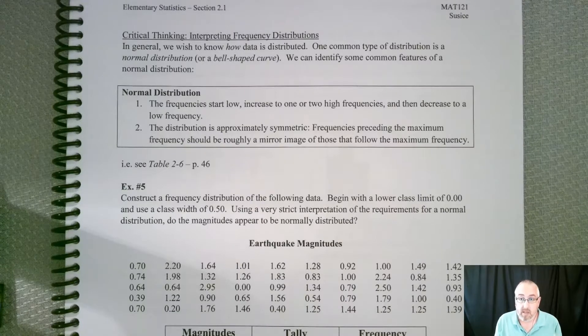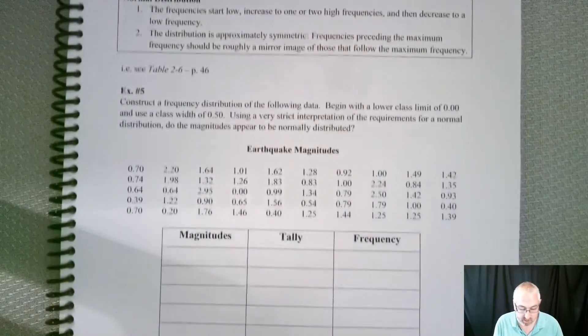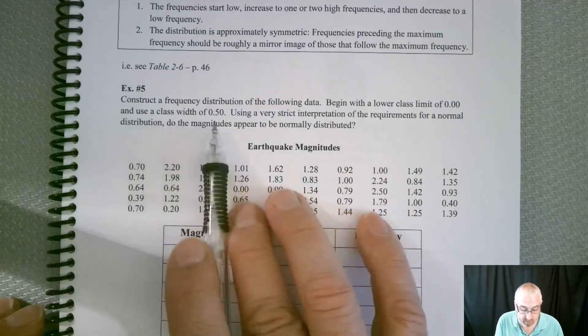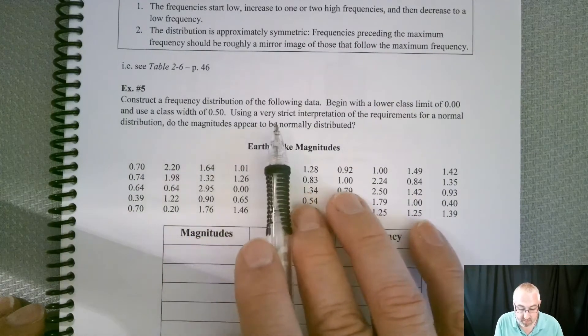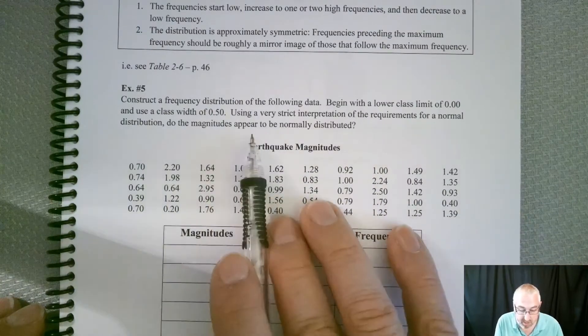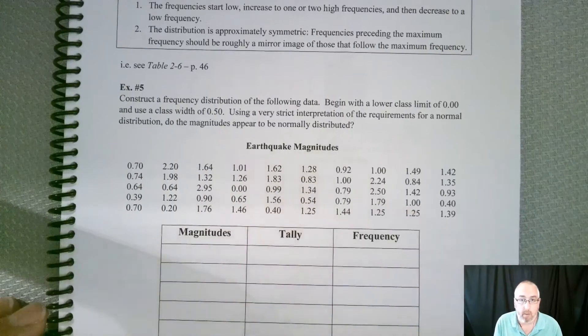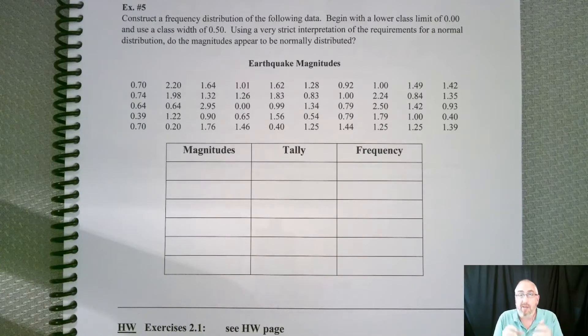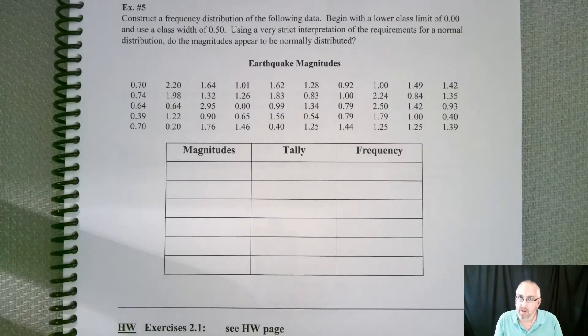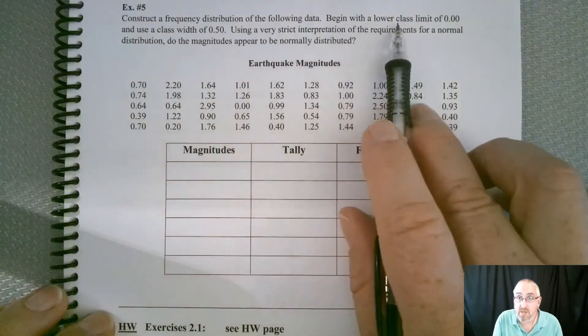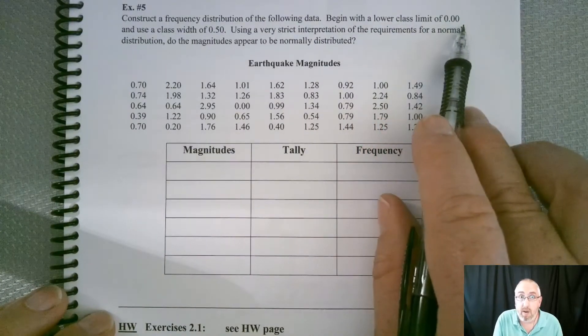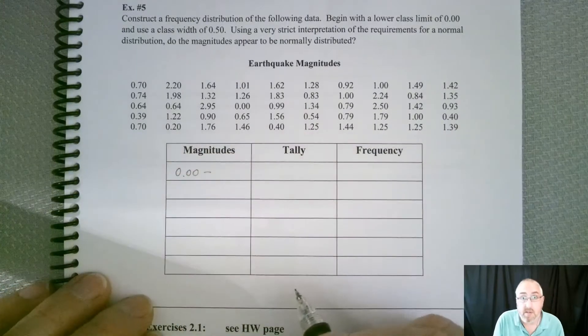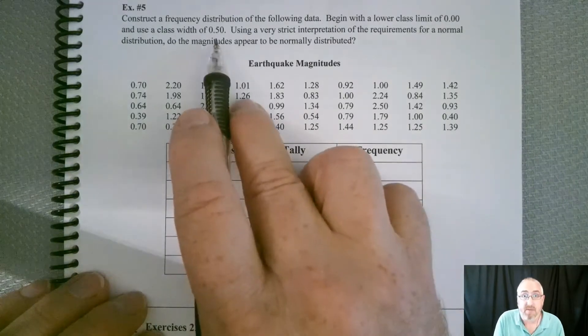So now let's take a look at this last example, which says to construct a frequency distribution of the following data, begin with a lower class limit of 0.00 and use a class width of 0.5. This one wants you to start with a lower class limit of 0.0 for the first class and then use a class width of 0.5.